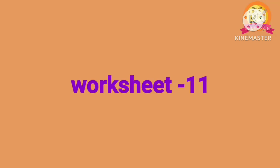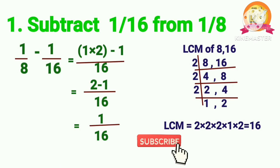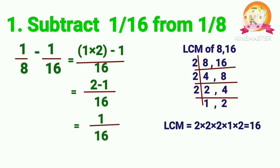Worksheet 11. First problem: Subtract 1 by 16 from 1 by 8. That means 1 by 8 minus 1 by 16. As denominators 8 and 16 are different, calculate the LCM, which is 16. After subtracting, we get 1 by 16. So 1 by 8 minus 1 by 16 equals 1 by 16.